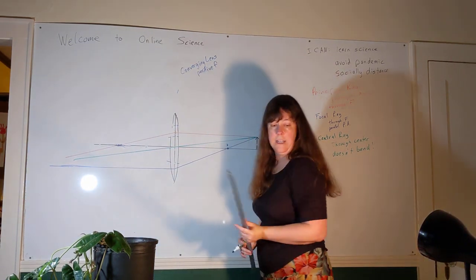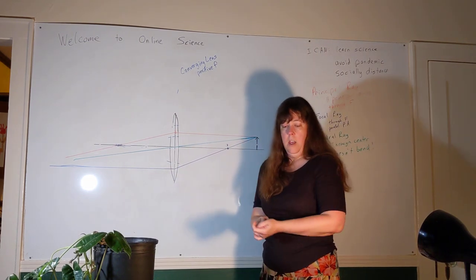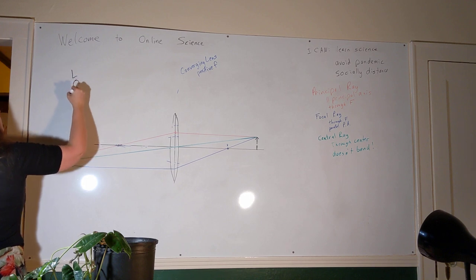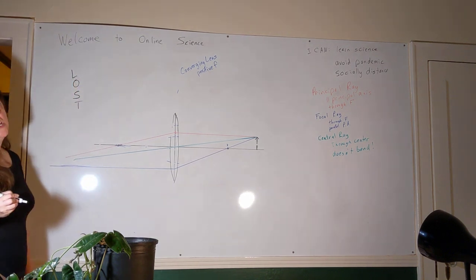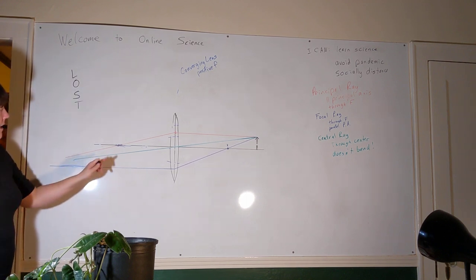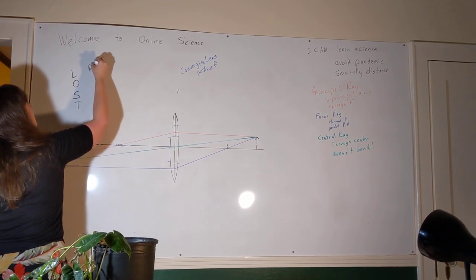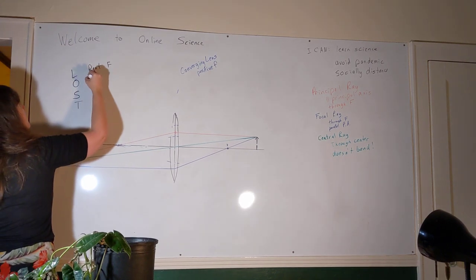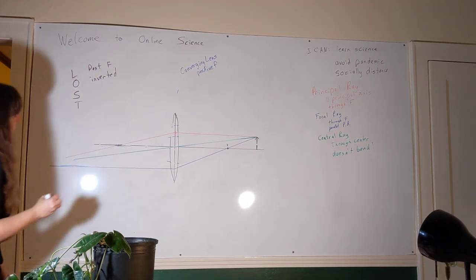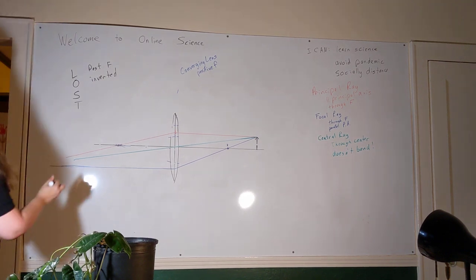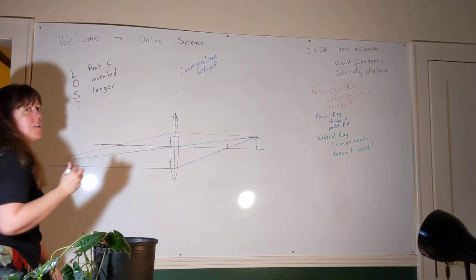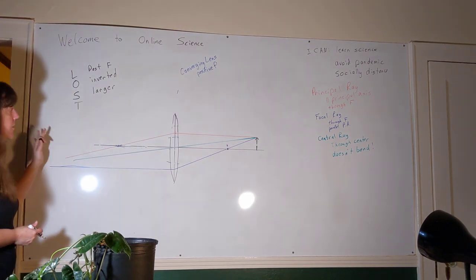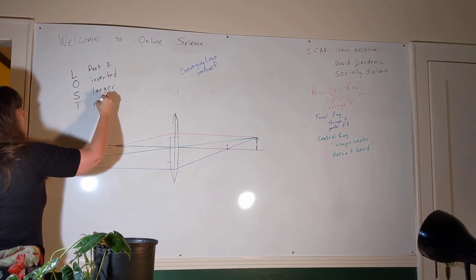If we draw those lines out far enough, they intersect to form an image. Using LOST — location, orientation, size, and type — the image is located past the focal point, its orientation is inverted, its size appears larger than the object, and the type is real. The light rays creating this image are actual light rays, so if I put a piece of paper there, I could project this image onto it.